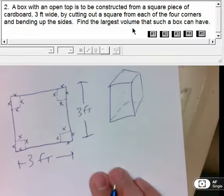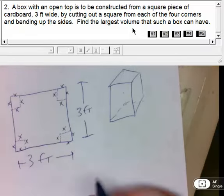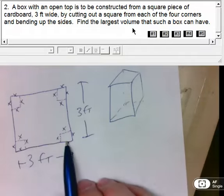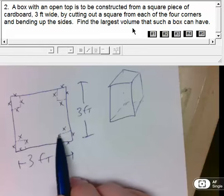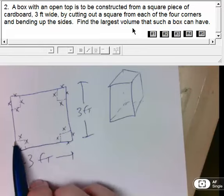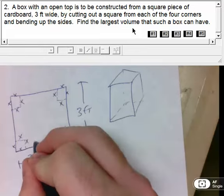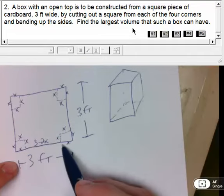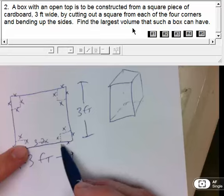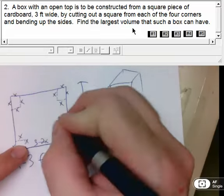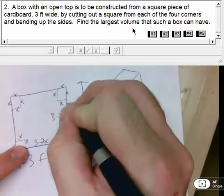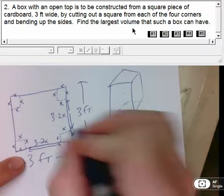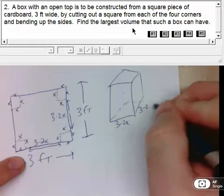We know volume is length times width times height, but we don't have representations for those yet. This square cardboard piece was 3 feet wide to begin with. But then we cut out X from this side and X from this side. So the distance that's left over is 3 minus 2X. We take that full 3, cut X, cut X, and what's left over is 3 minus 2X. Same thing here, 3 minus 2X. So my square base is going to be 3 minus 2X by 3 minus 2X.